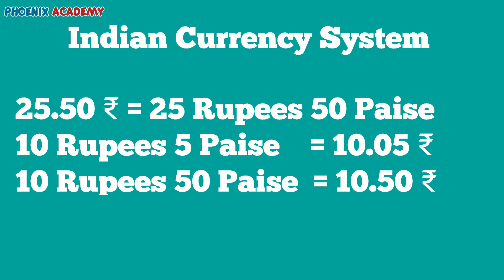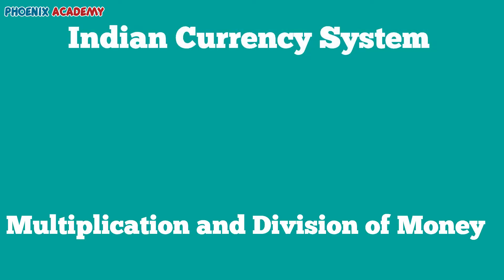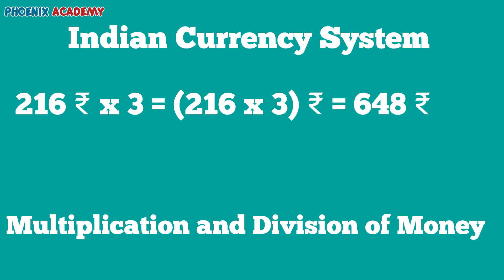Here, we are going to learn the multiplication and division of money. Multiplication of rupees and paisae by a number is done like multiplication of numbers. If the amount is expressed in short form in the product, a dot is put after 2 places from the right.